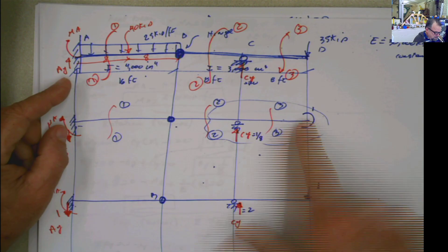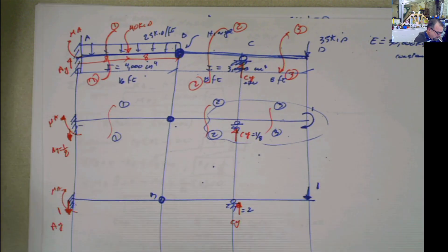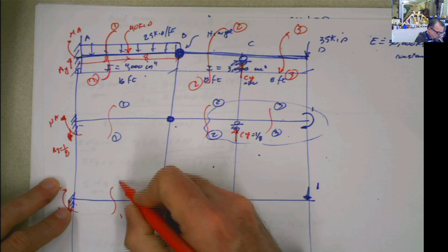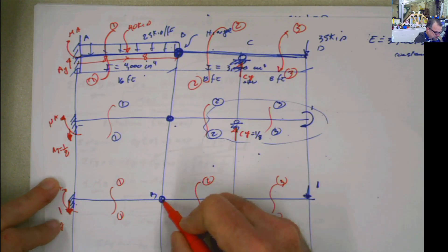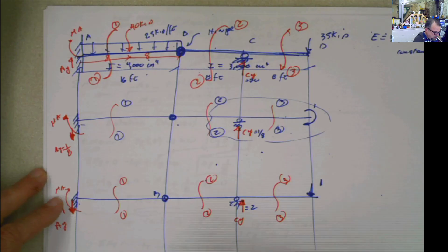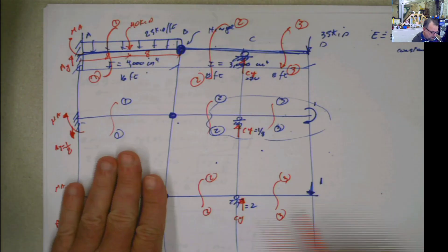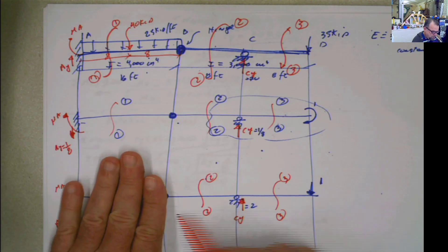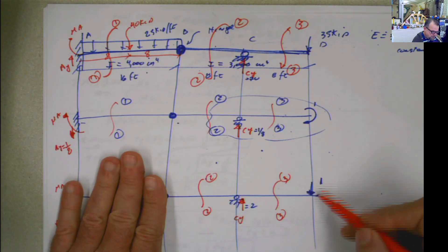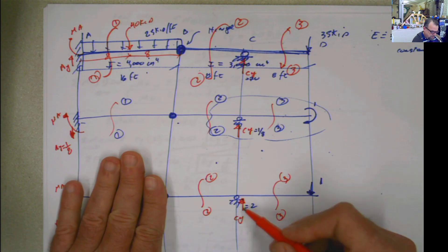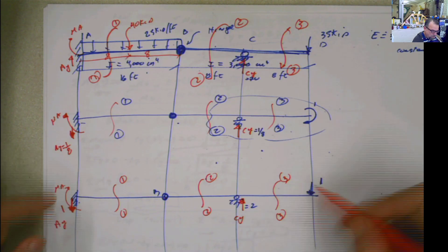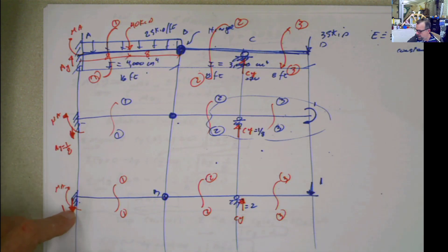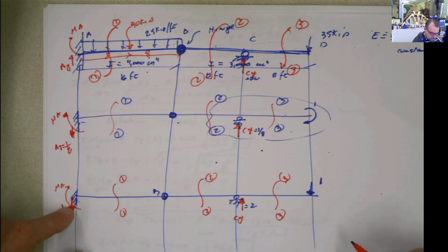We did that part. Now we're going to do this part. So we're going to start applying sections 1-1, 2-2, and 3-3. This is a hinge, fixed support, fixed support. In the previous part, we already calculated these reactions by doing the moment here. If I do moment here, I'm going to have Cy multiplied by 8 minus 1 multiplied by 16, so you can find Cy equals 2. Then you do summation of forces in y in the overall beam and get this value.